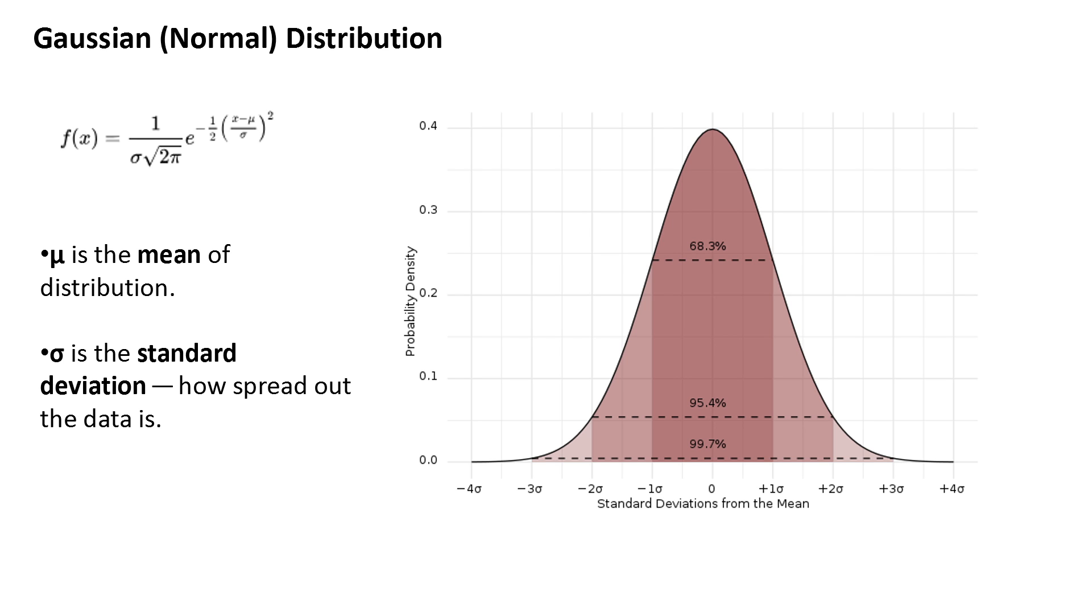There are two variables: mu, which is the mean of the distribution, and sigma, which is the standard deviation - how spread out the data is.